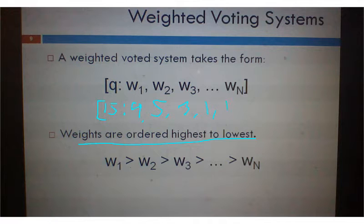player 4 has 1, player 5 has 1, player 6 has 1. So there's our 15, or our 20 votes total. We only need 15 to pass.